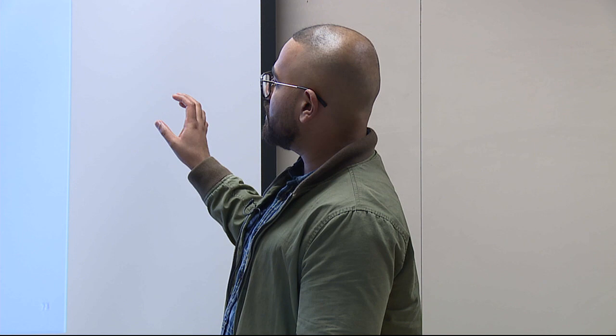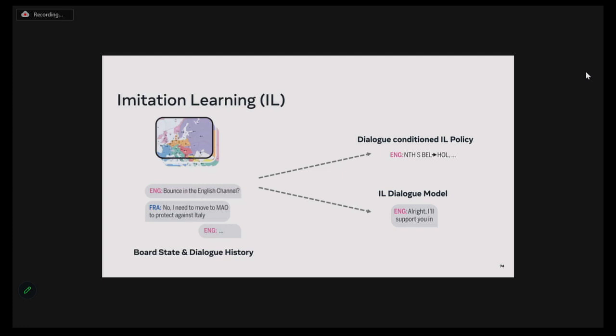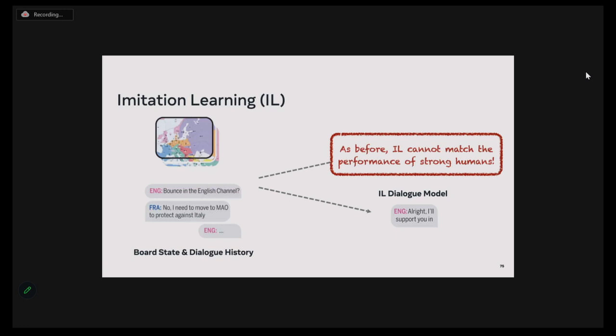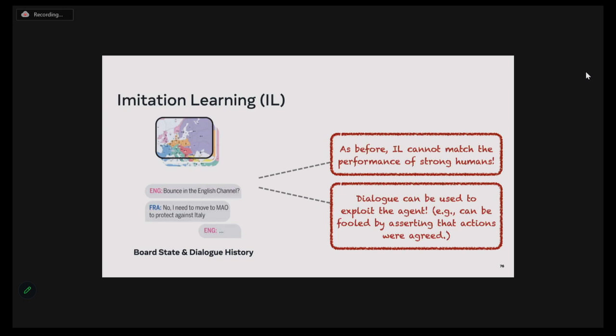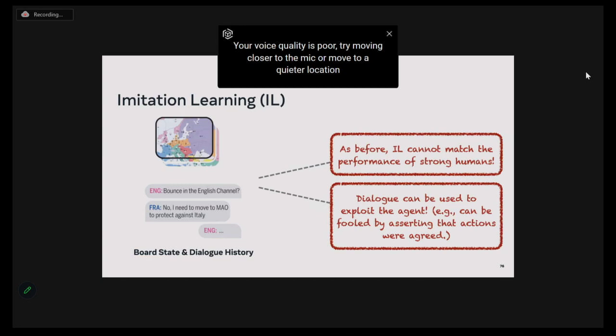We could start with human data and train an imitation learned agent conditioned on the board state and dialogue history — to first predict the policies of the agent, and simultaneously train an imitation learning agent to predict the dialogue. But imitation learning alone cannot match the performance of strong humans, and dialogue models trained with imitation learning can be easily exploited. For example, you could tell the agent 'I'm glad we agreed that you will move your unit out of Paris,' and since similar messages only happened in training data when an agreement was reached, the imitation learning agent moves its unit out of Paris, even if doing so was a strategic blunder.